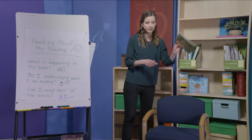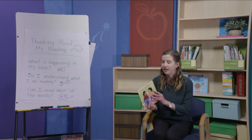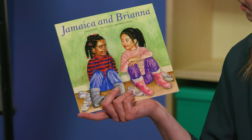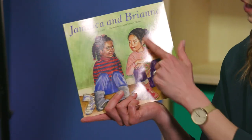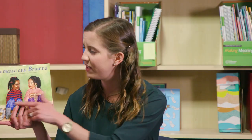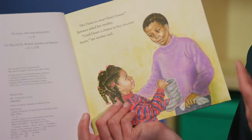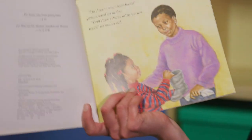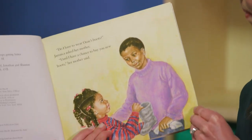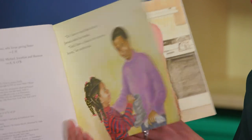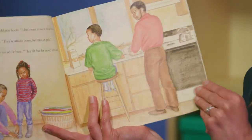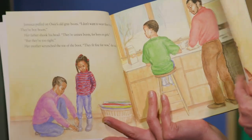Today, I'm going to read a little bit more of my independent reading book Jamaica and Brianna for you. Some of you who were here in our earlier lessons remember — before I read, I predicted based on this cover. I said I think these girls are going to be friends. And then I just read the first couple pages in our last lesson. I can retell because good readers can understand what's happening and retell in their own words. Jamaica didn't want to wear the boots that her mom said she had to wear. She thought that they were ugly and old, but her mother said they're fine for now.